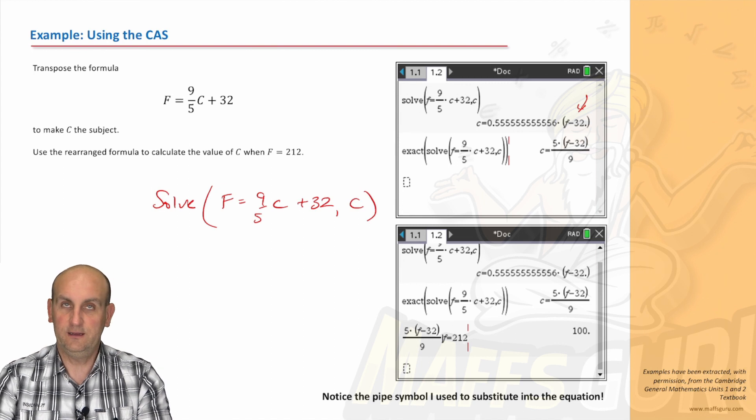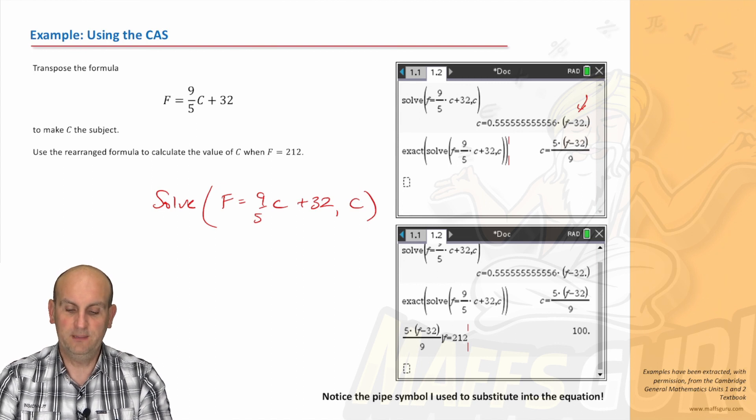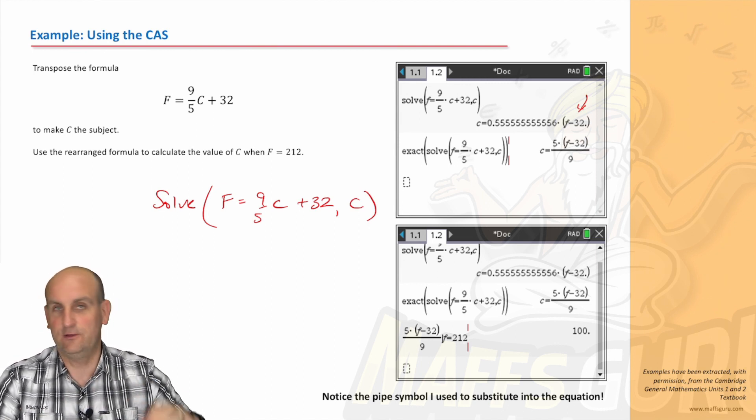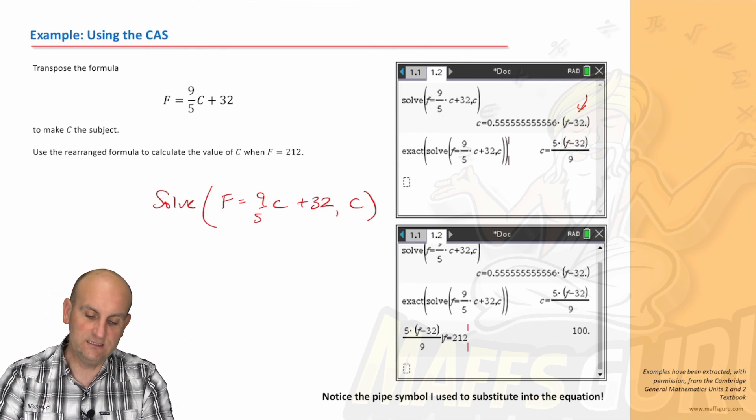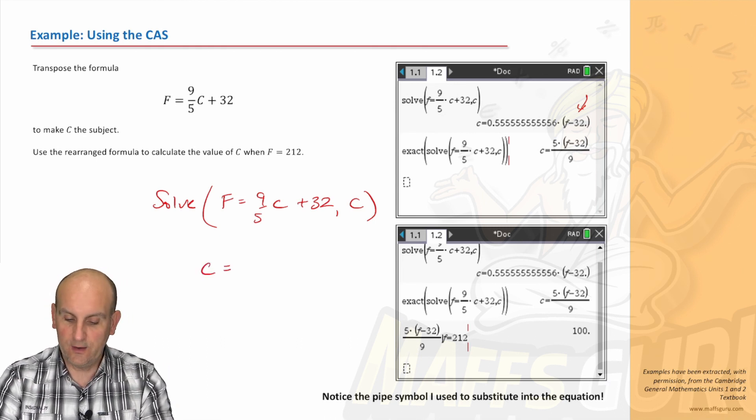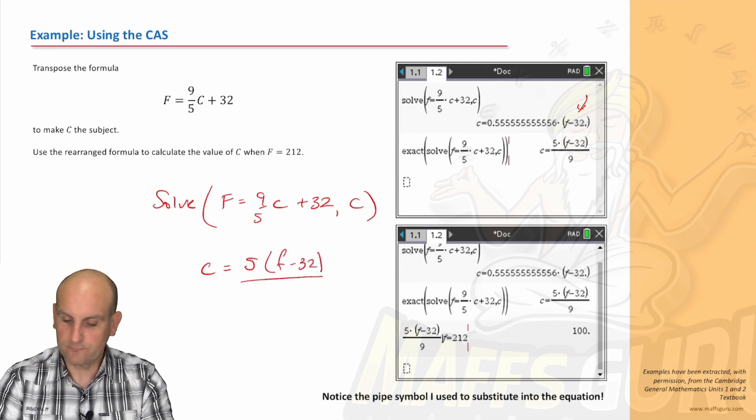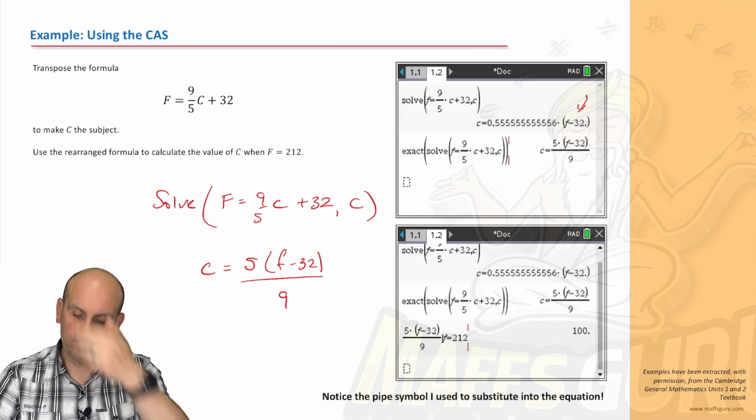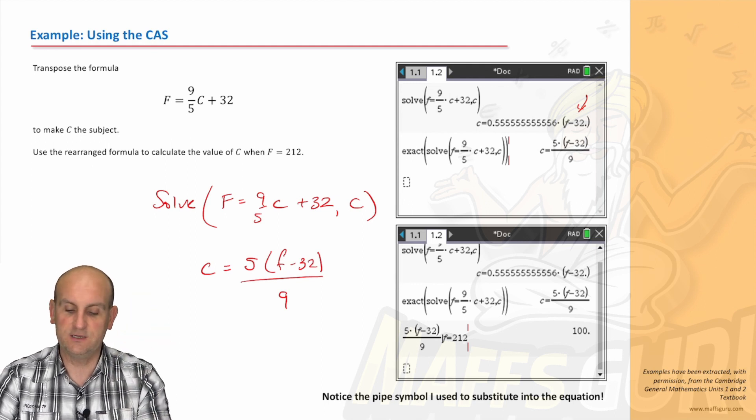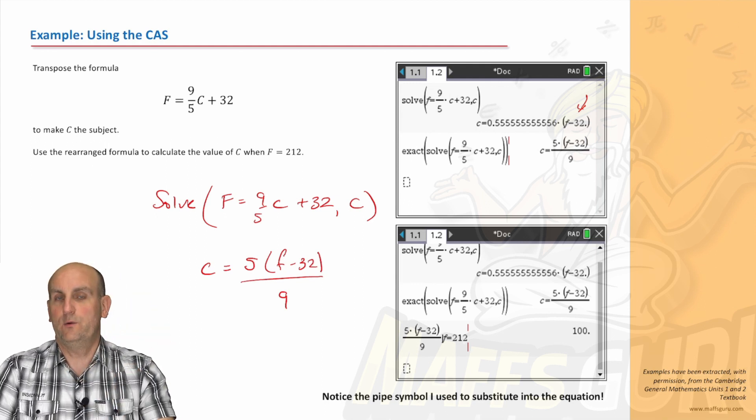Okie dokie. Then I realized my calculator had this thing called an exact. And so when I did exact, it actually turned it back into the format that I wanted, which was 5F minus 32 on 9. Whew, thank you very very much.